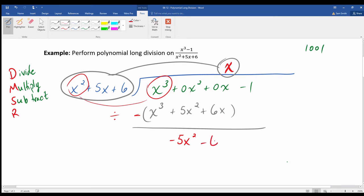Subtract 0x take away 6x, result negative 6x. And minus 1 take away nothing, result minus 1.